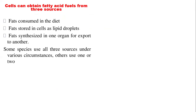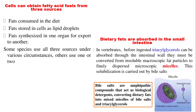Cells can obtain their fatty acid fuels from three sources, as explained. Some species use all three sources under various circumstances, while others use one or two. Dietary fats are absorbed in the intestine. Before ingested triacylglycerol can be absorbed through the intestinal wall, it must be converted from insoluble macroscopic fat particles to finely dispersed microscopic micelles. This solubilization is carried out by bile salts produced in the gallbladder.